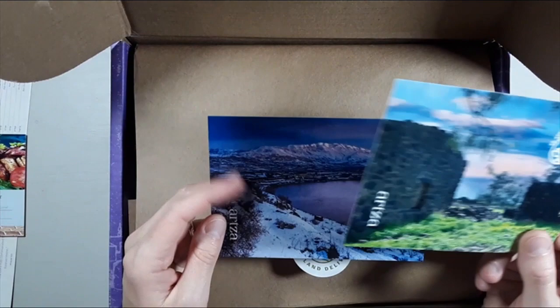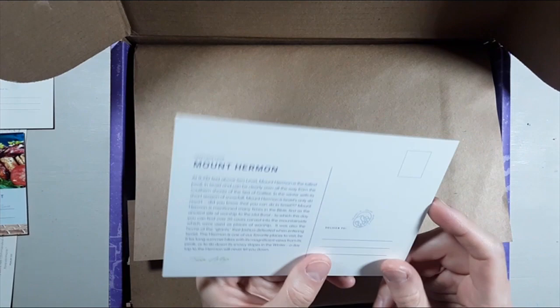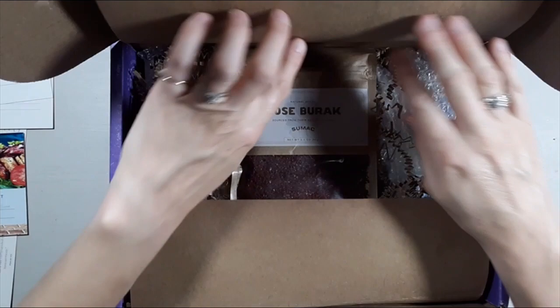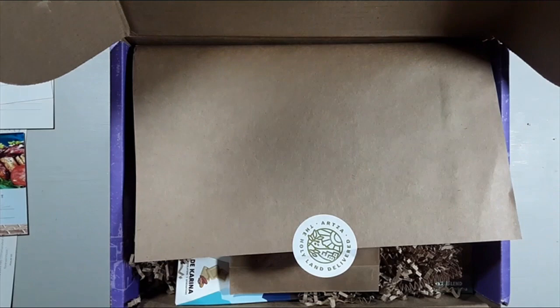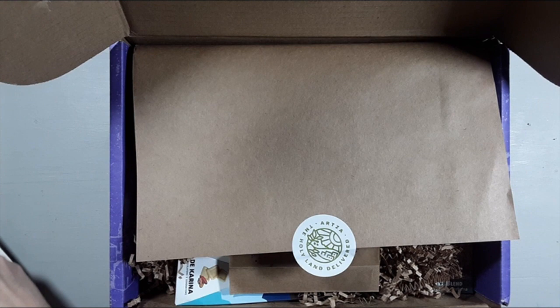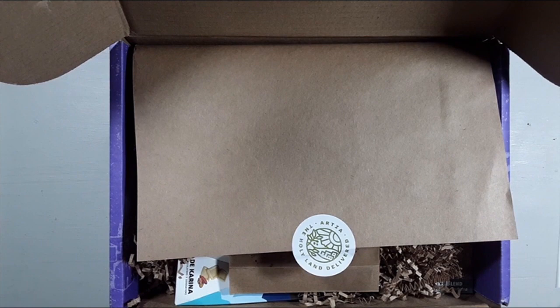They include some beautiful postcards. This one says Gamla Fortress, beautiful. And this one says Mount Hermon, beautiful. Now let's dive into the actual box itself. I think I want to move the box so I can have more space here to dig into the box. I'll grab the card though that says what's in the box because then we can dive into each thing in detail here.